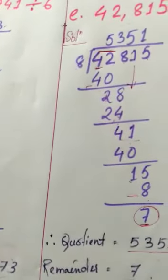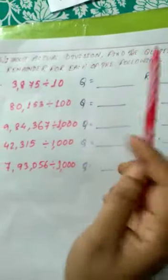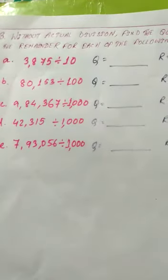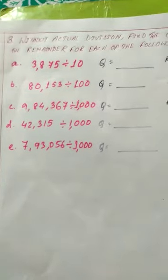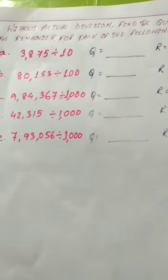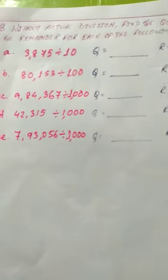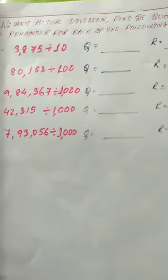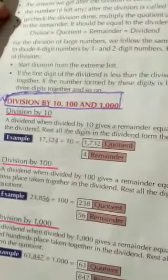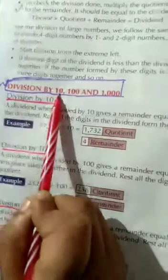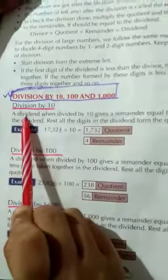Now for Question 3: find the quotient and remainder without actual division. Just like we learned to multiply directly by 10, 100, or 1000, we can divide the same way without performing full long division. Please take out your book and turn to page 24, where division by 10, 100, and 1000 is explained.